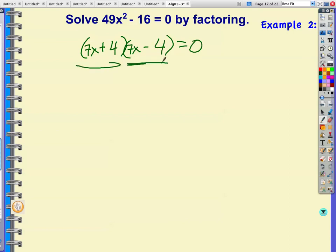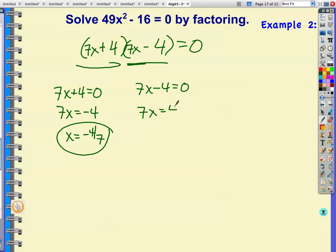Either this part equals zero or this part equals zero. So I say 7x plus 4 could be zero or 7x minus 4 could be zero. 7x is equal to negative 4, so x is equal to negative 4/7. Or 7x equals positive 4 divided by 7, I get positive 4/7.